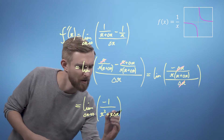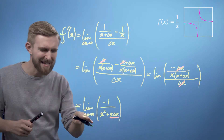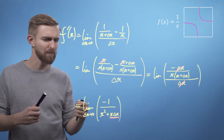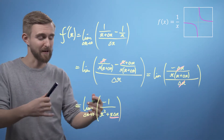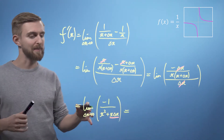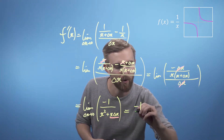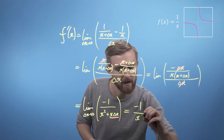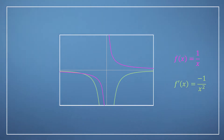We look at this function and say this term has got a delta x in it. This means that as delta x becomes very, very small, this term is going to become very small and therefore eventually become irrelevant. So as we apply our limit, we can actually ignore this term entirely. And we get minus one divided by x squared. So as we can see just by looking, this derivative function is negative everywhere, and like our base function, the derivative is also undefined at x equals zero.